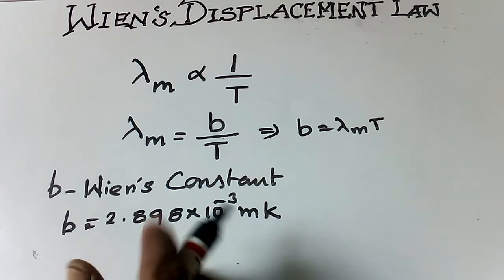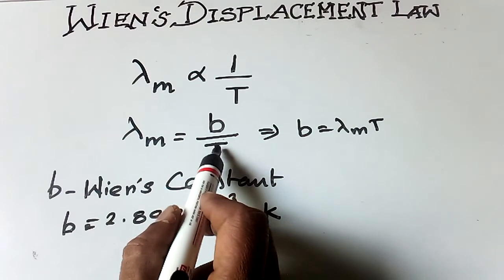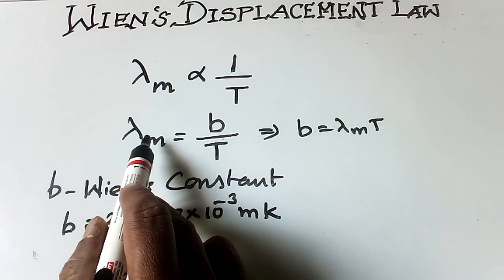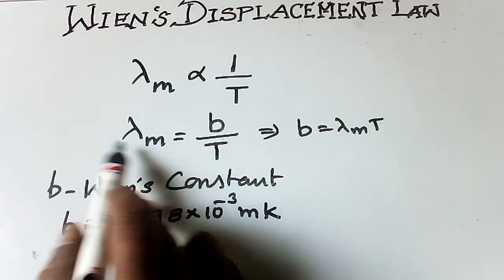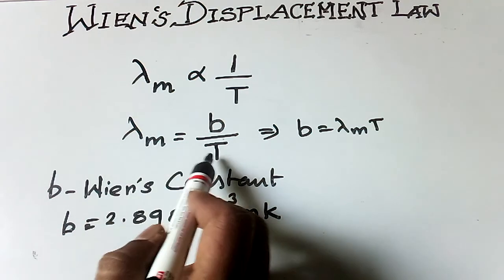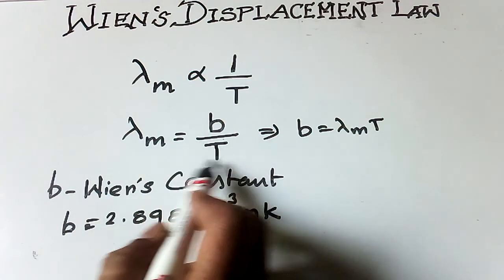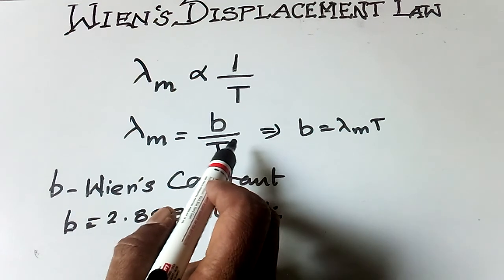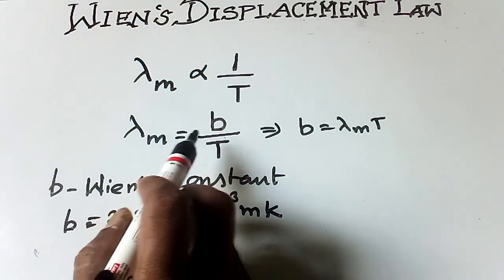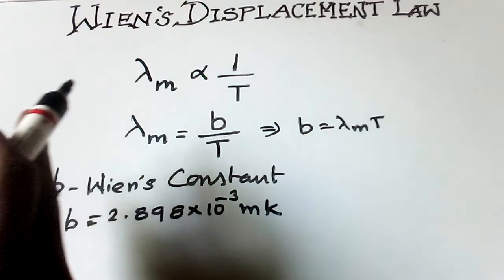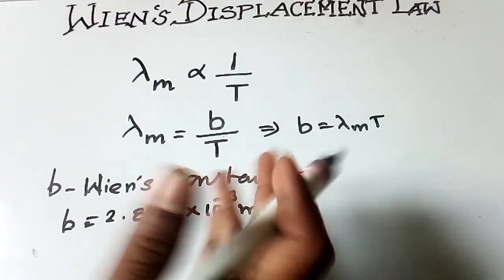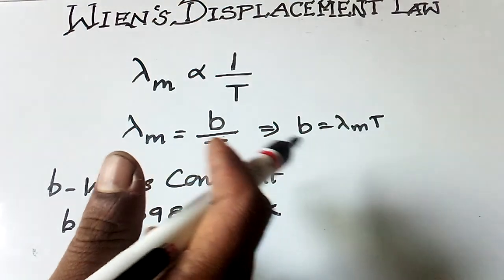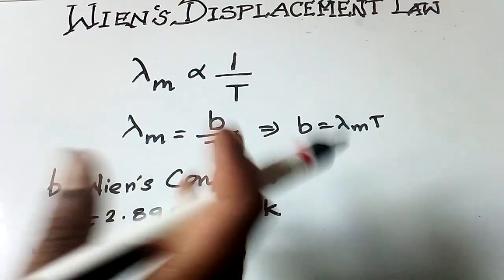So it implies that if the temperature of the black body increases, maximum intensity wavelength lambda m shifts towards lower wavelength. Because they are inversely proportional, whenever we increase the temperature of the black body, maximum intensity wavelength lambda m shifts towards lower wavelength or higher frequency.